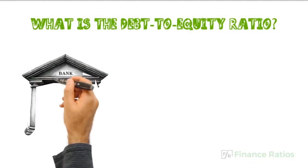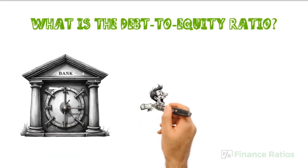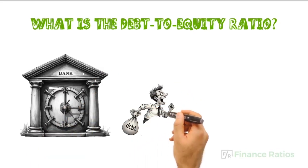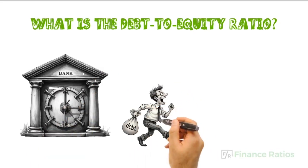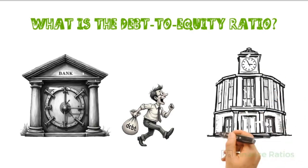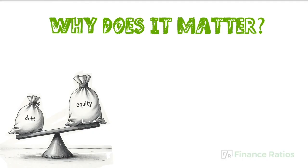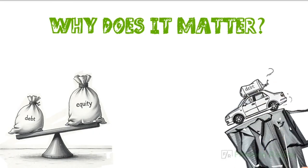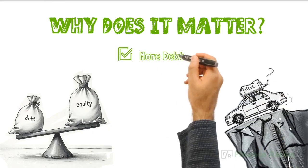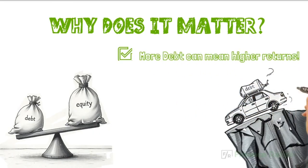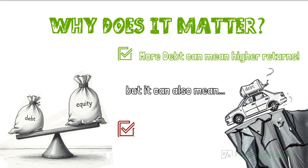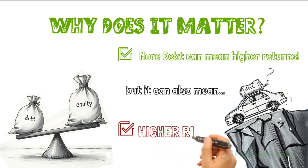So what does this ratio do? The debt to equity ratio measures how much debt a company is using compared to its equity to finance its assets. Why does it matter? This ratio helps us understand how risky it is to invest in a company. More debt can mean higher returns, but can also mean higher risk.